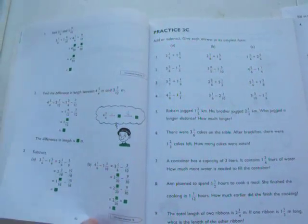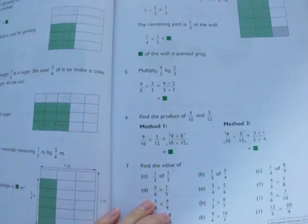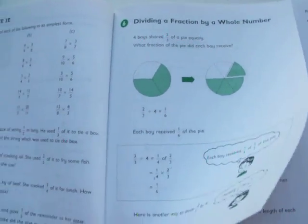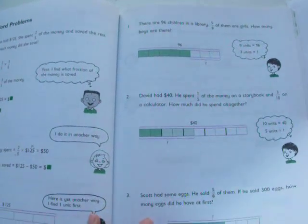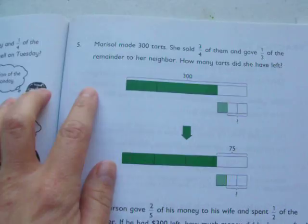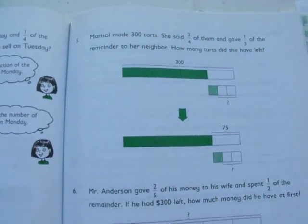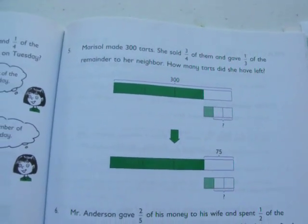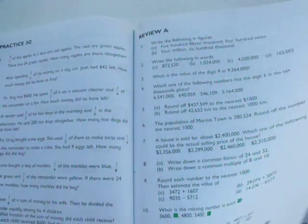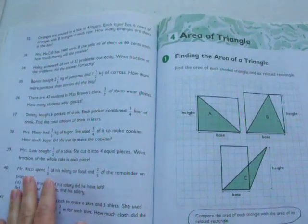You can see here they have adding and subtracting fractions, multiplying fractions, dividing a fraction by a whole number. I have word problems here. Like, here's one. It says, Marisol made 300 tarts. She sold three fourths of them and gave one third of the remainder to her neighbor. How many tarts did she have left? Some of them sound kind of hard to figure. But they teach you how to do that.